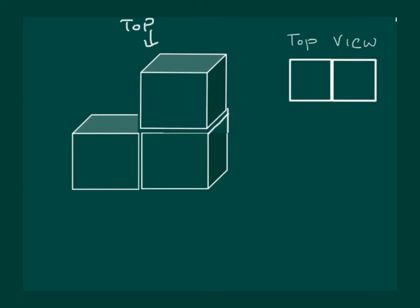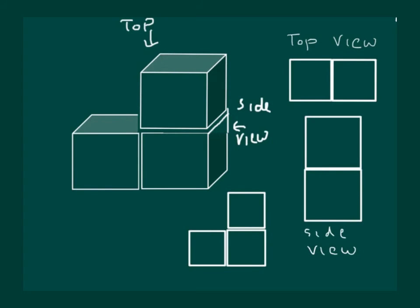Now let us try to draw the side view. Our side view would be a figure like this. This is the side view. And our front view would be something like this. So this would be our front view.